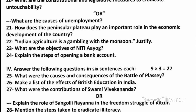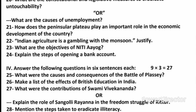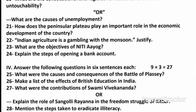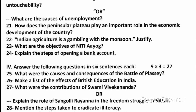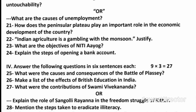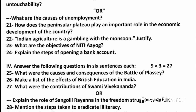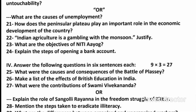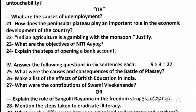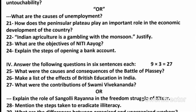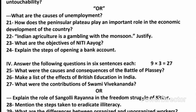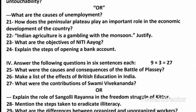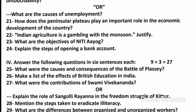Question 22: Indian agriculture is a gambling with the monsoons — Justify. Answer: The main occupation of the people of India, agriculture is controlled by the monsoon winds. Failure of rainfall leads to drought. Heavy rainfall causes loss of life and damage to property. Hence, Indian agriculture is called a gamble with the monsoons.